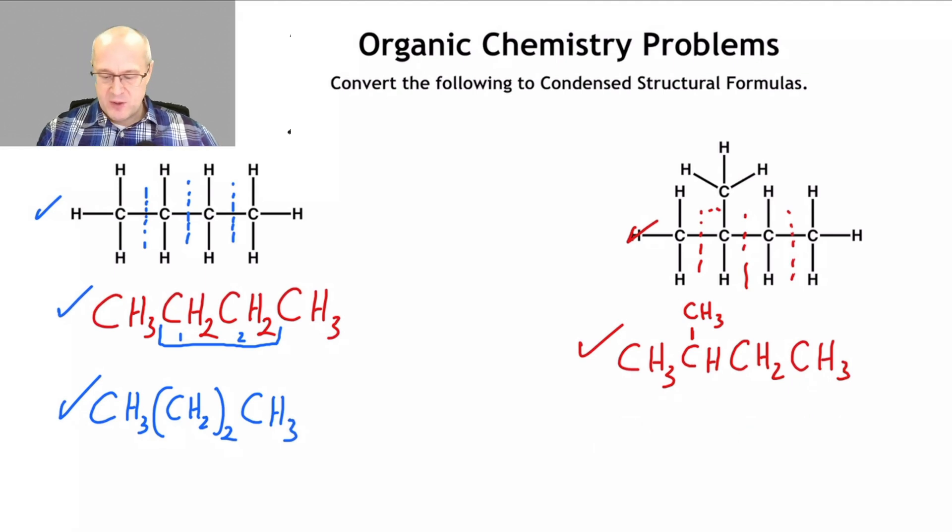Let me show you another way to draw the condensed formula of this molecule that's a little different than this one. So I could have said CH3, CH, CH3, CH2, CH3. Now, what is this saying to me? This is saying that this CH, which we did initially draw up here, saying that this CH3 is attached to this carbon right here. Now, how do I know that?